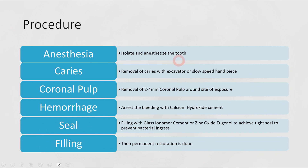Now talking about the procedure — the steps undertaken to perform Svex pulpotomy. Firstly, we anesthetize and isolate the tooth that has undergone traumatic pulpal injury. Next, we remove the caries around the exposure site using an excavator or slow speed handpiece. Next, the coronal part around the inflamed tissue of about 2 to 4 mm is removed. Then we ensure that bleeding is controlled, as this tells us whether it is reversible or irreversible pulpitis. In Svex pulpotomy, we arrest the bleeding by use of calcium hydroxide cement.